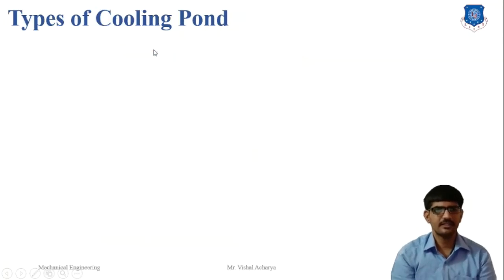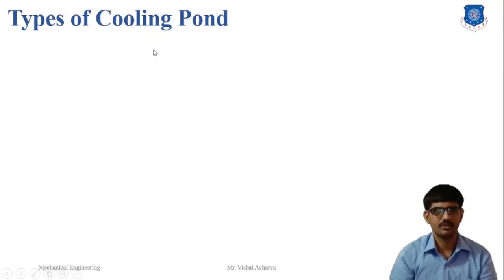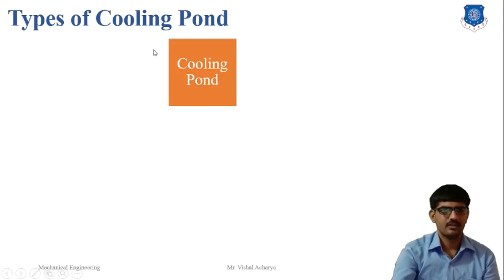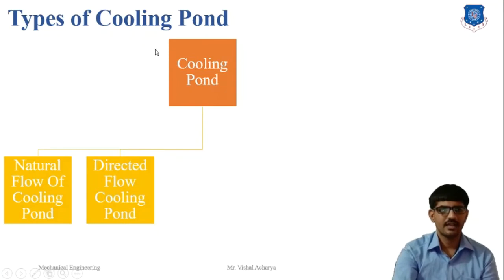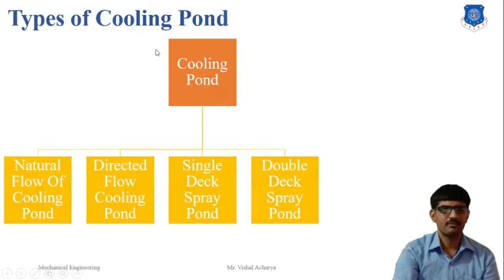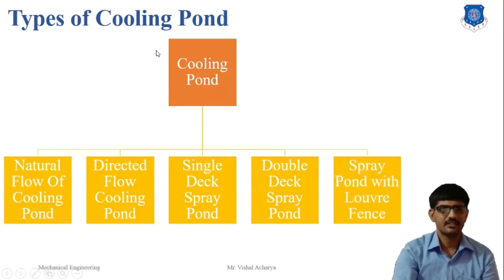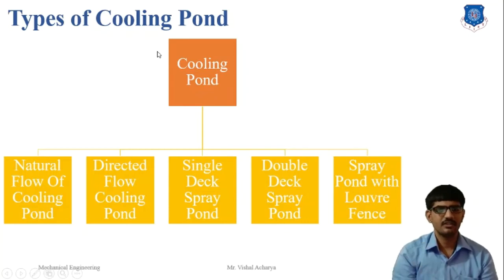Next is the cooling pond. The cooling pond is used when the requirement of the cooling action is not a large volume but a small volume. The types of cooling pond are: first is the natural flow cooling pond, second is the directed flow cooling pond, third is the single deck spray pond, fourth is the double deck spray pond, and last is the spray pond with fins.